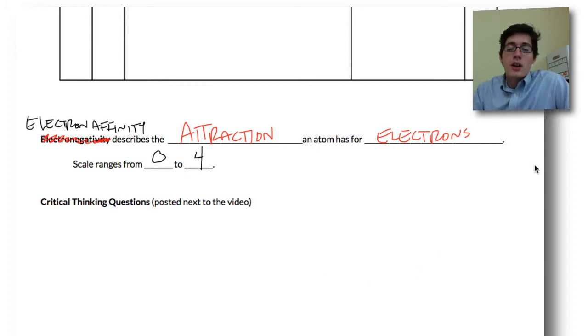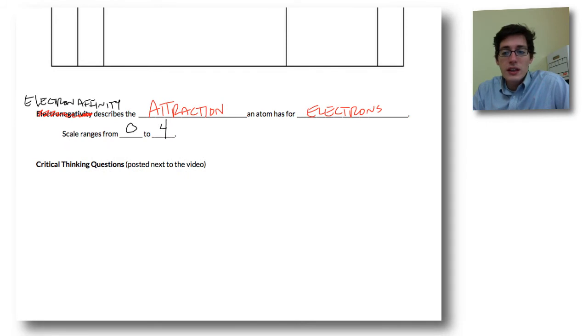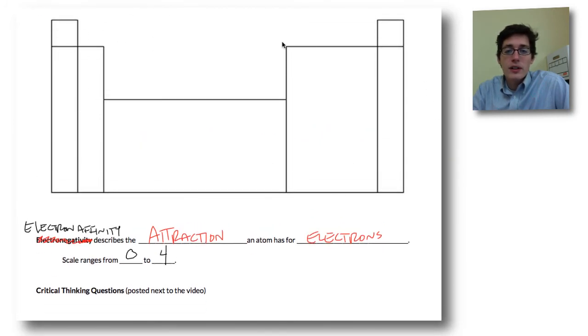We're going to come back to this in bonding when we talk about ionic versus covalent bonding. For now, you just need to know that there is a difference and there is a pattern here on the periodic table.